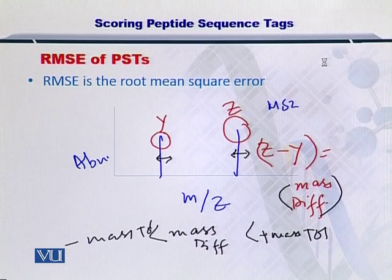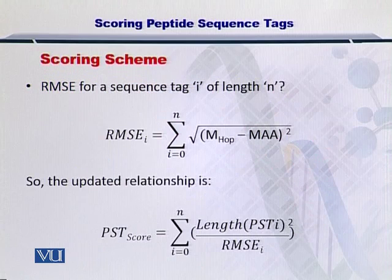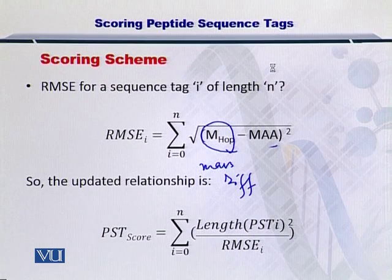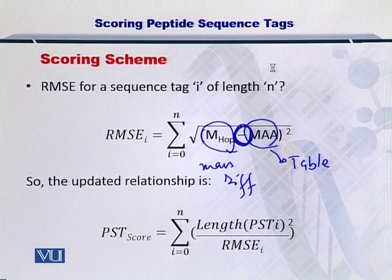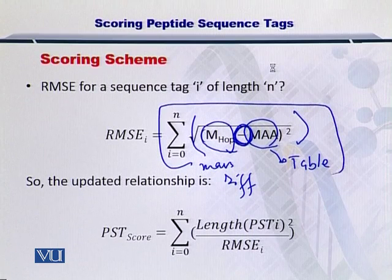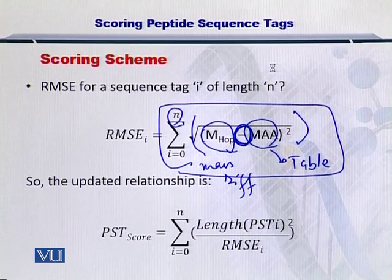All of these RMSE offsets give you the quality of the peptide sequence tag. To incorporate them into the search, you take the mass difference between the experimental peaks and the mass of the amino acid from the table. If there is some difference between these two, you take the square and then the square root to get the absolute value, and you sum them for all N PSTs. This gives you the RMSE, or simply the quality of the PST.